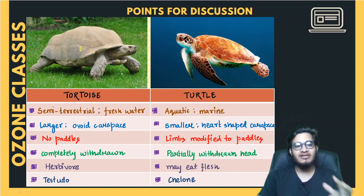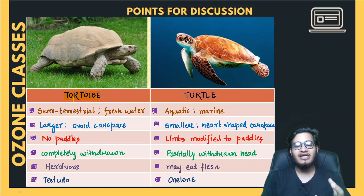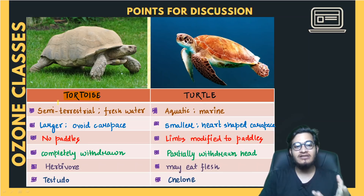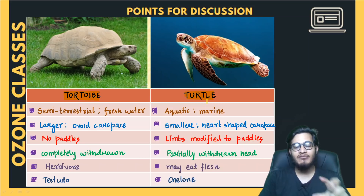First, the tortoise is very heavy in appearance — it is really heavy and a bulk-sized organism. When you talk about turtle, it is quite light and much smaller in size as compared to the tortoise.